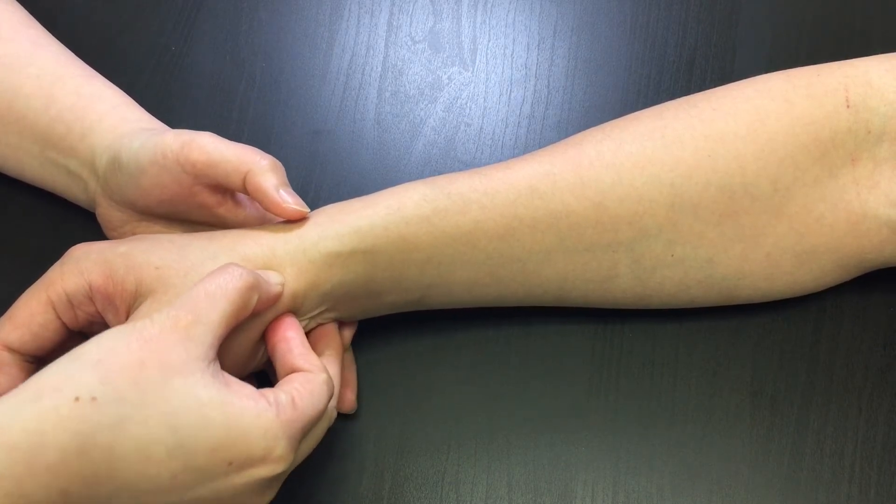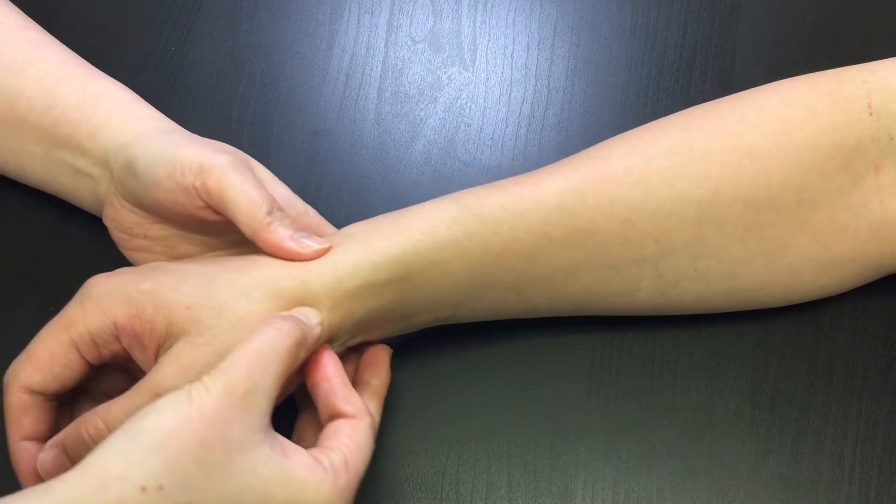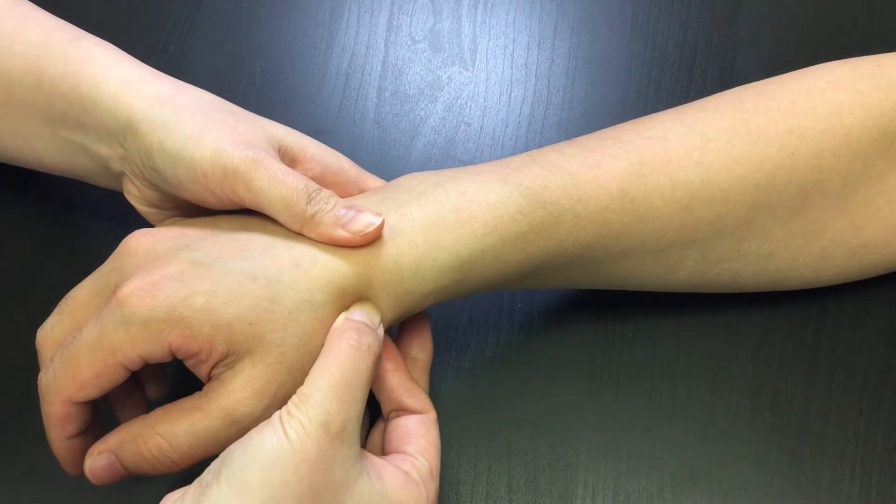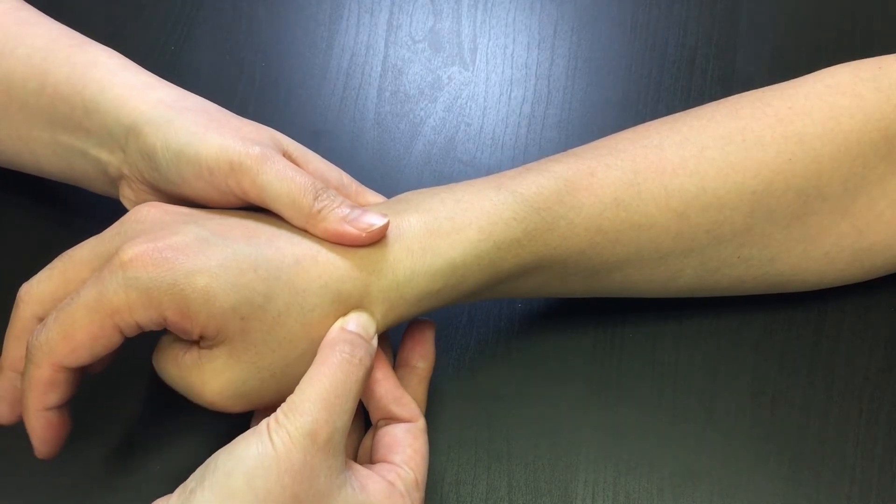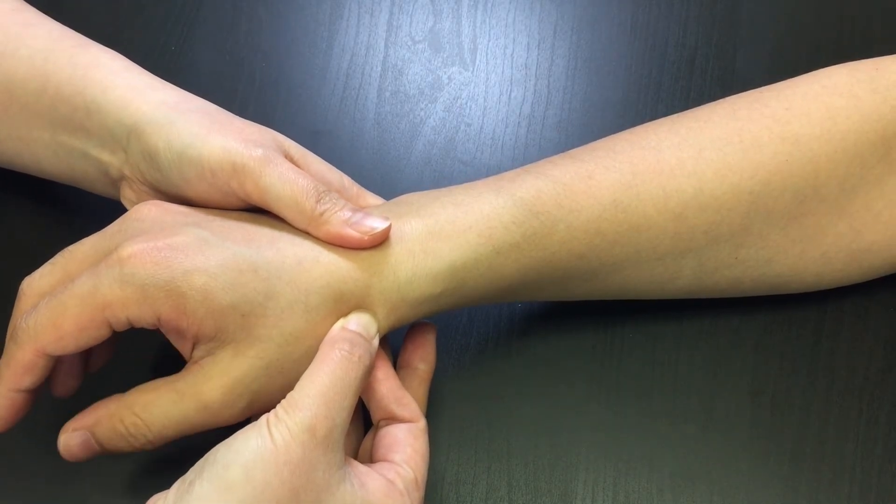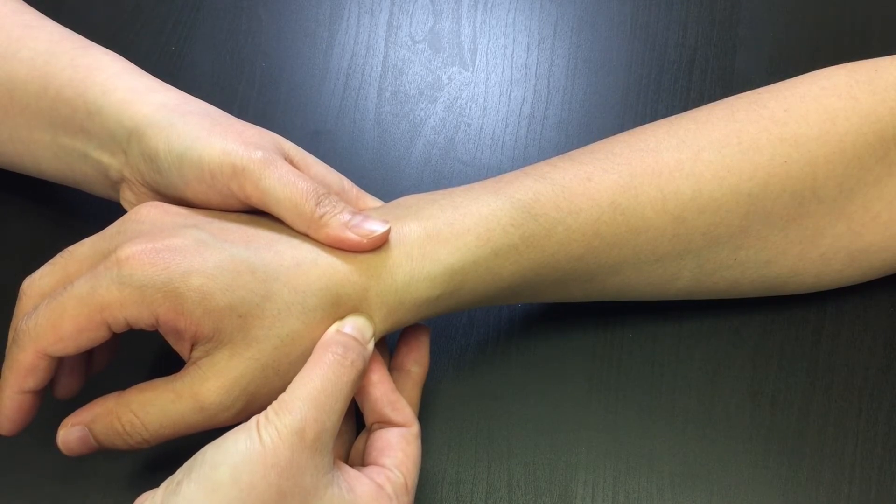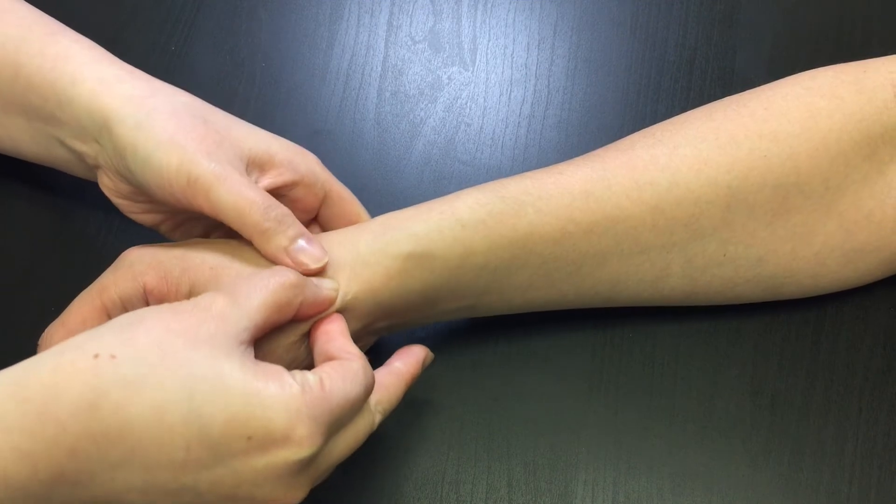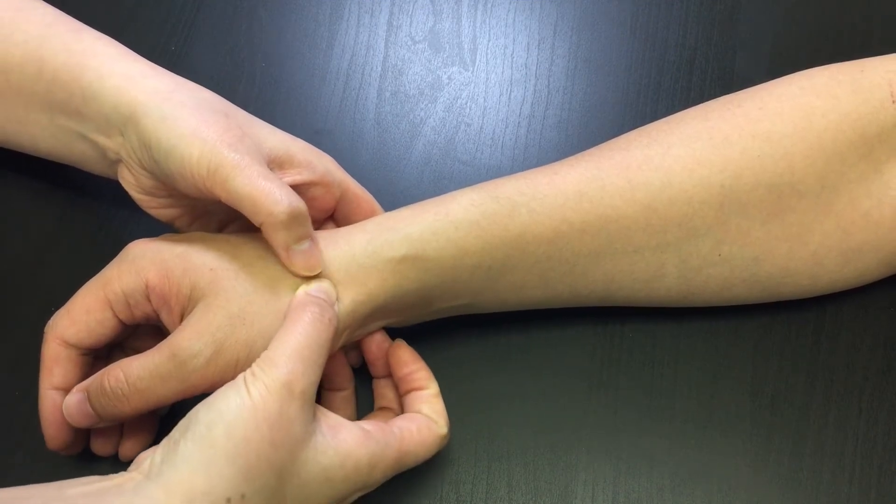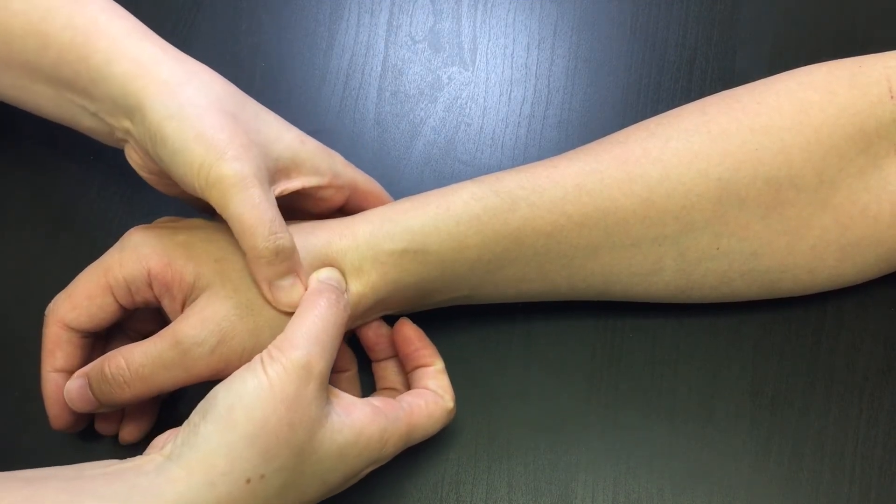To confirm that you are on trapezium, not on the base of the first metacarpal bone, ask your patient to move their thumb in flexion and extension actively. If your fingers feel the movement of the first metacarpal bone clearly, you are on the metacarpal bone, not trapezium. Check again to make sure you are palpating between the base of the first metacarpal bone and scaphoid.